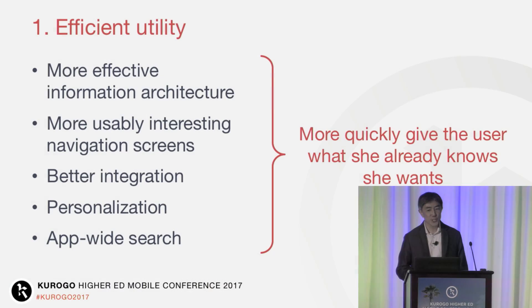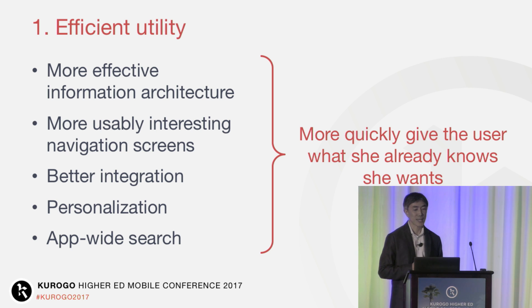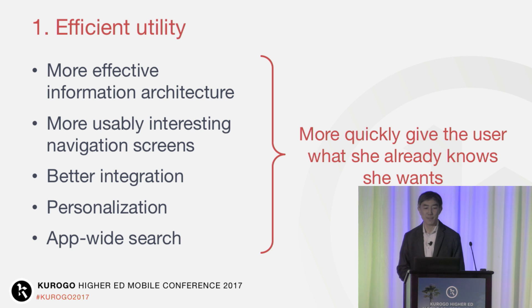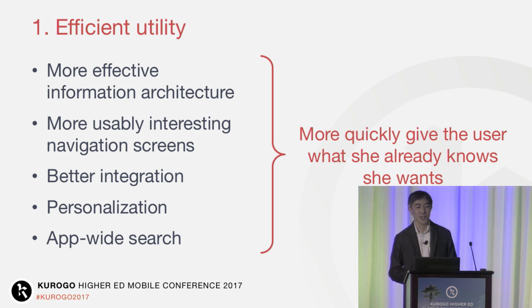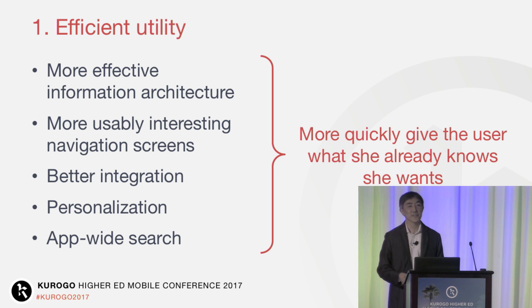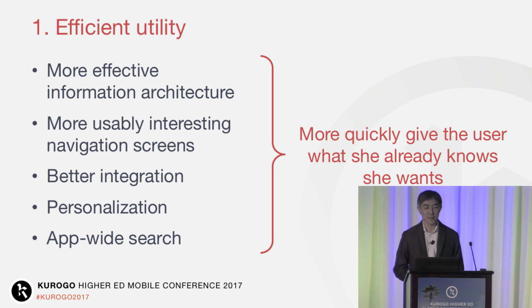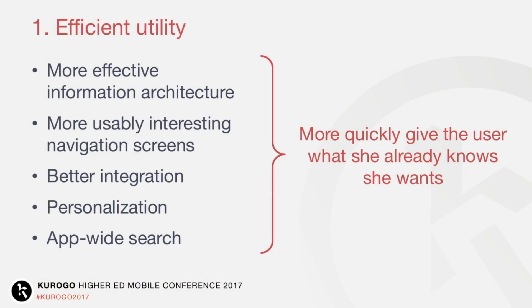With our new analytics tools, you can track what's being searched for in your app, both in the federated search and module-by-module, and use that information to deliver better search. All these tactics are focused on more quickly and efficiently giving the user what she already knows she wants. But let's remember the measure of success is not just how many taps or seconds or sessions are spent in the app — it's what end those taps and seconds serve in users' lives. You're not just helping them find when the bus is arriving; you're helping them catch the bus to get to class, or lunch with friends, or a study group.